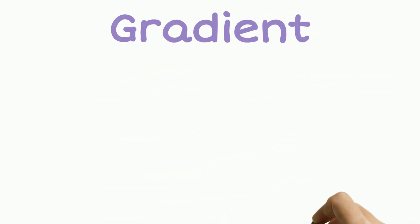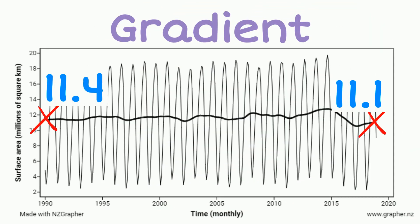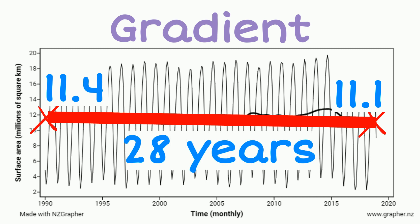Looking at the next graph we can see that the data is spread over 28 years. So what we want to do is calculate the gradient of this.